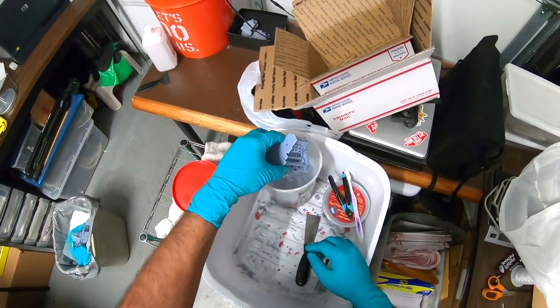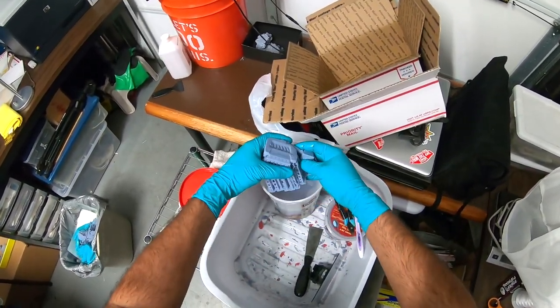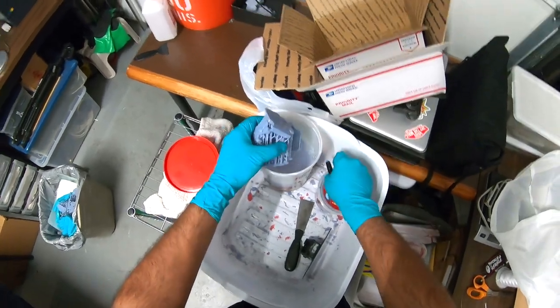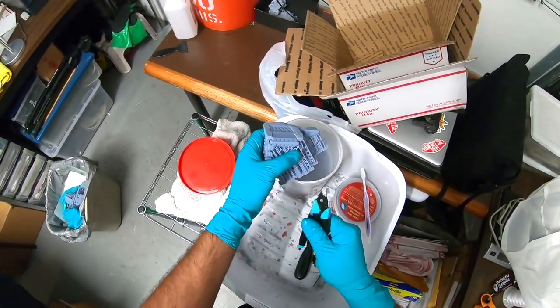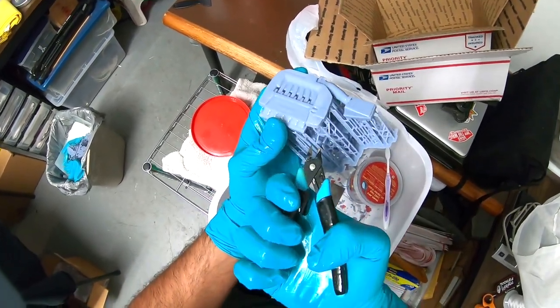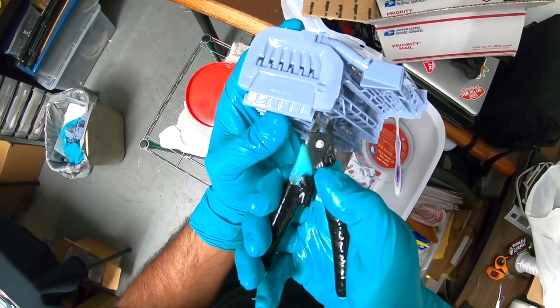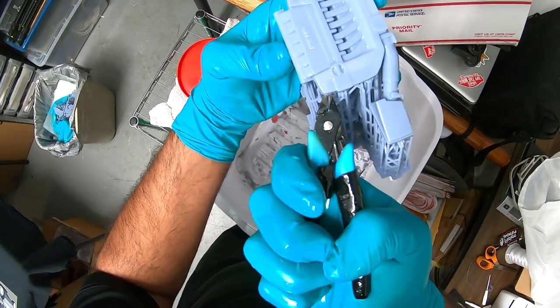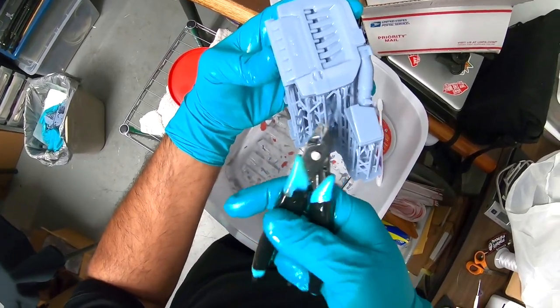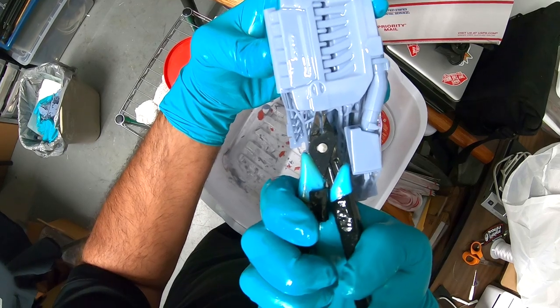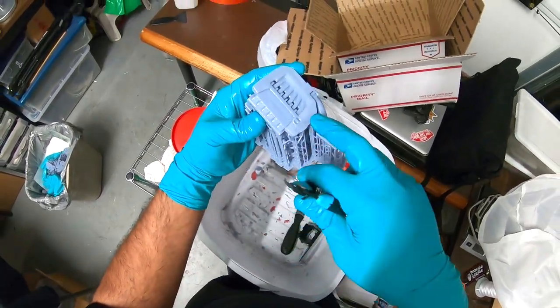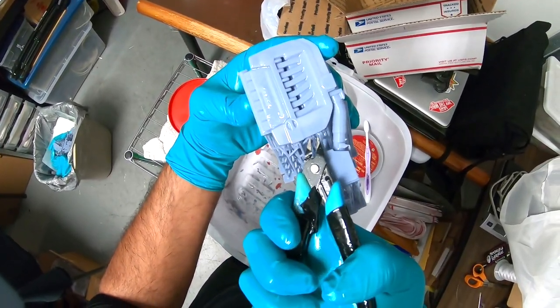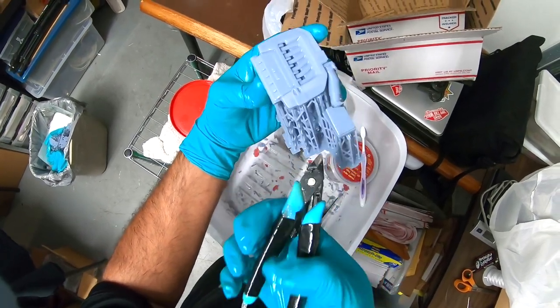Now, a lot of people like to cure the resin and then snip off the supports. I like to do it the other way. I like to do it when it's fresh because it's more flexible. When we're dealing with really thin supports, this is kind of the easiest way. So what we're going to do is snip this support. This is very thin material and we are trying to prevent from snapping it as we take the supports apart.